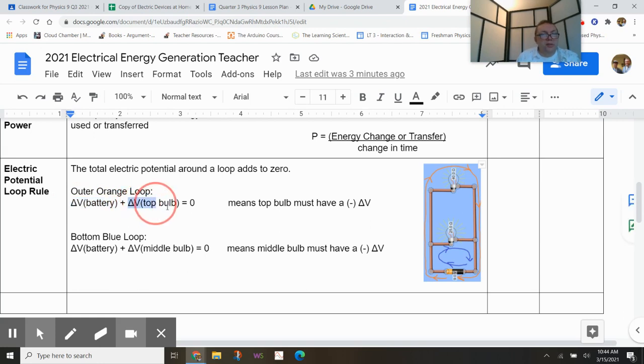And I add to that, the potential difference from that top bulb in the orange loop, that should be negative. That top bulb should be taking energy from those charges. If we add those up for a loop, it should add to zero.